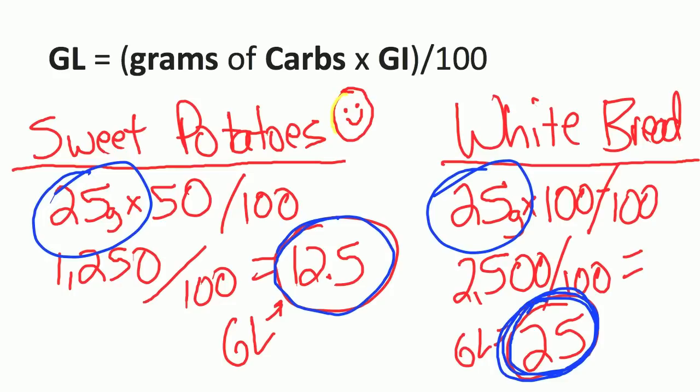That is the glycemic index versus the glycemic load. I hope this illustrates that it really is important what type of carb sources you choose, and what type of foods overall you choose if you're trying to eat right in general, especially to lose fat. The type of food you eat definitely matters. That's it for our discussion of the glycemic index versus the glycemic load. I hope you enjoy the rest of your day, and I'll see you next week. Until next time, peace.